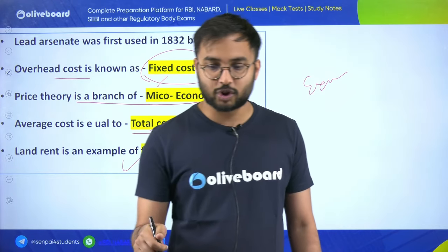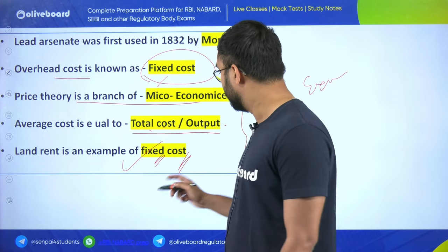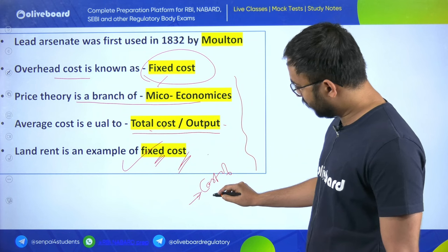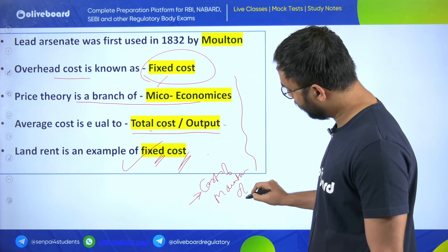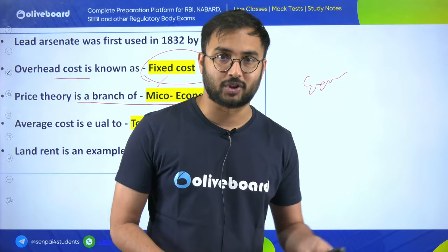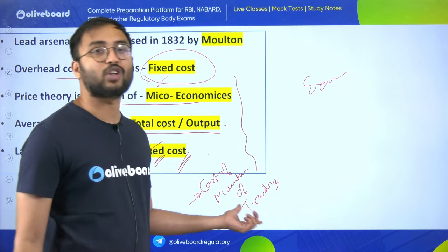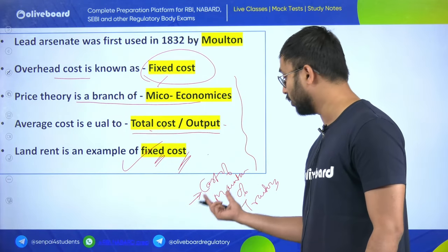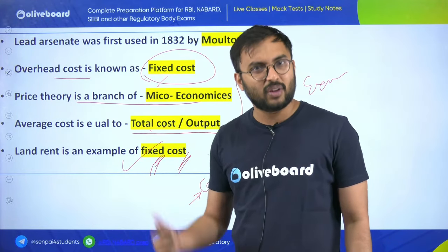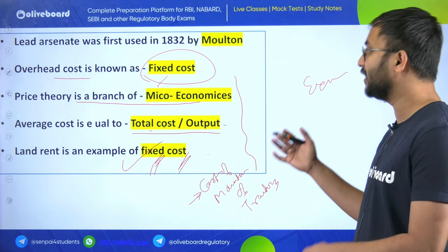Variable cost is cost that can change - for example, tractor maintenance cost varies depending on depreciation and repair needs. If the next year's monsoon is large and production is high, land rent and workers' wages won't change, so they remain fixed cost. Prime cost is also known as variable cost. Opportunity cost is also known as alternative cost - it is what you lose when you choose one option over another.